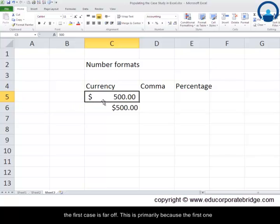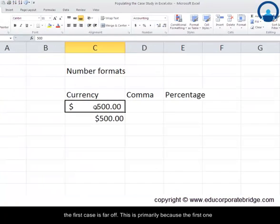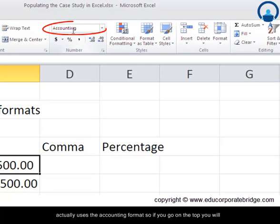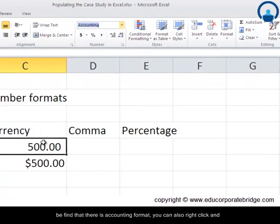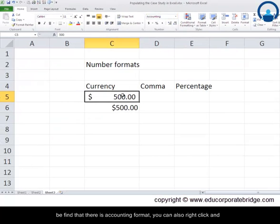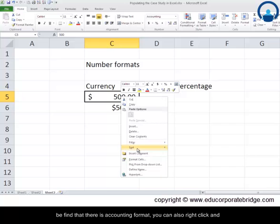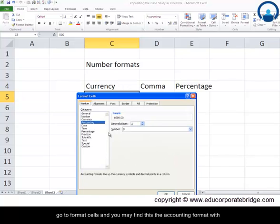This is primarily because the first one actually uses the accounting format. So if you go on the top you'll find that this accounting format—you can also right-click and go to Format Cells and you may find that this is an accounting format with two decimal places.